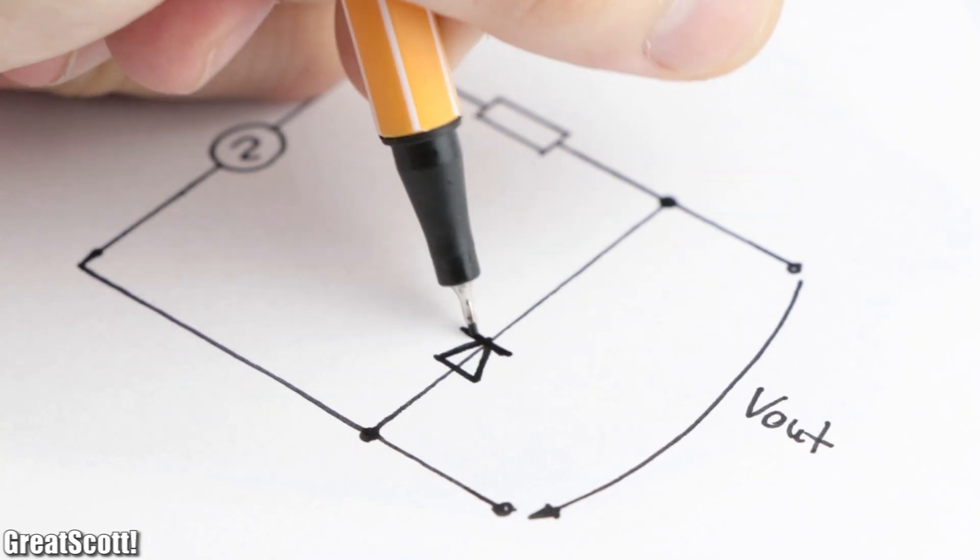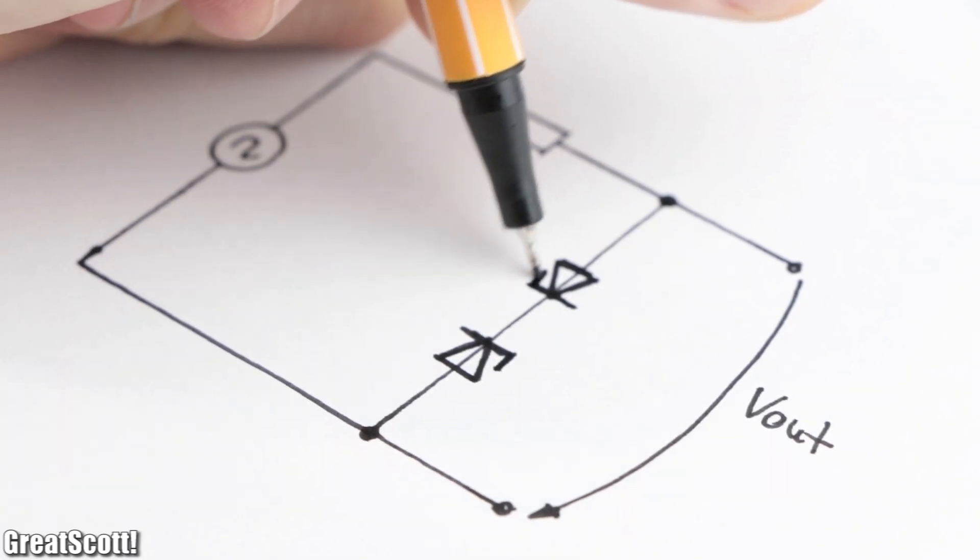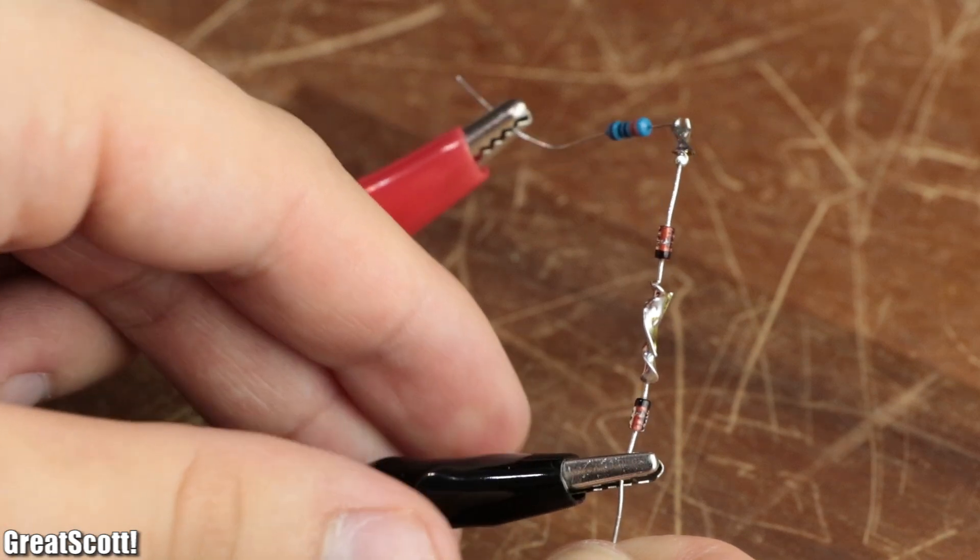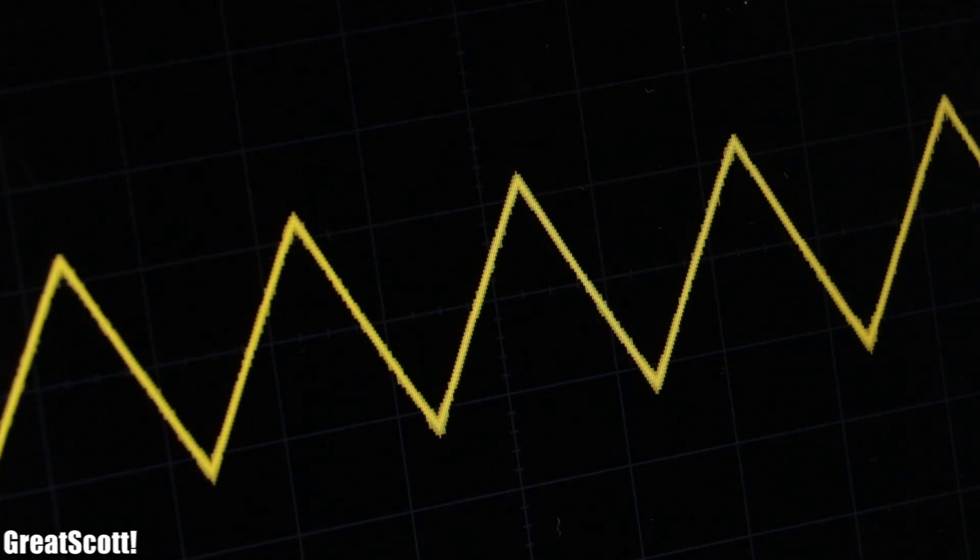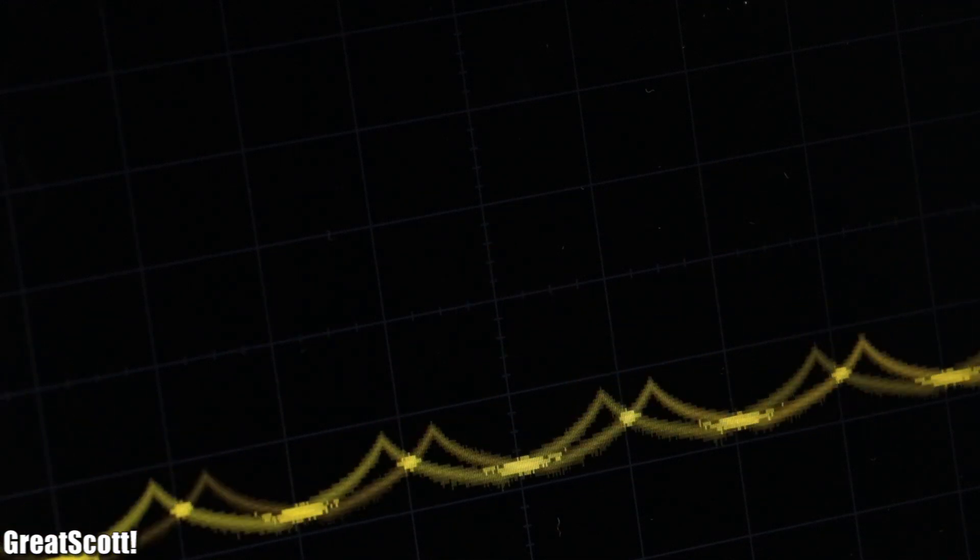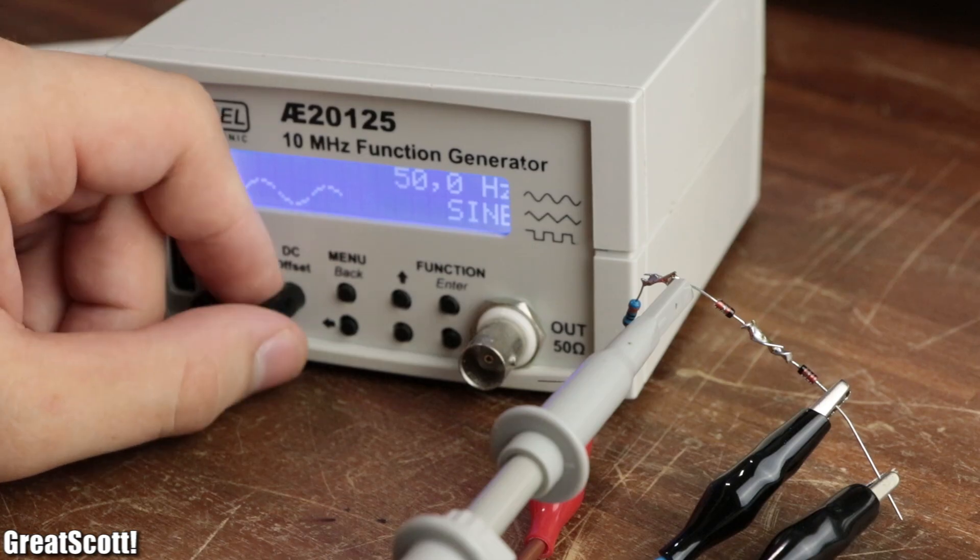Another way of utilizing them is by adding two of them in series and applying an AC signal. This way the positive and negative peaks are once again clipped to a certain voltage value.